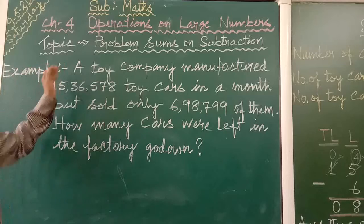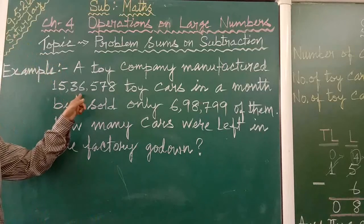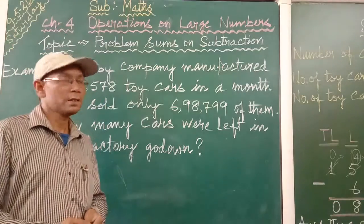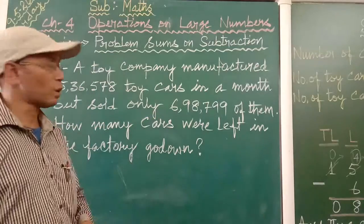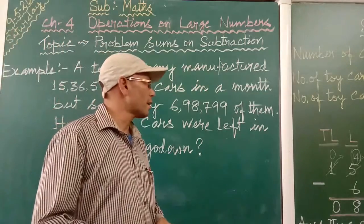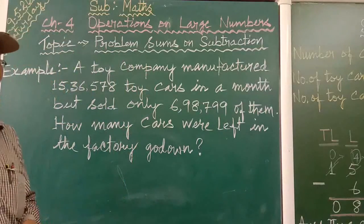Just see. A toy company manufactured 1,536,578 cars in a month but sold only 698,799 of them. How many cars were left in the factory godown?